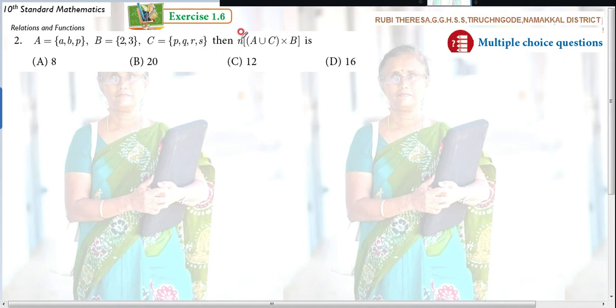Then N of A union C cross B is dash. So N of A union C cross B. Already what we have studied? N of A cross B is equal to what? N of A into N of B. Isn't it? Similarly here, N of A union C into N of B.